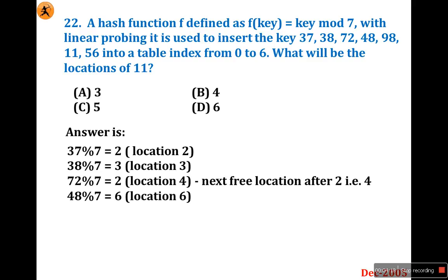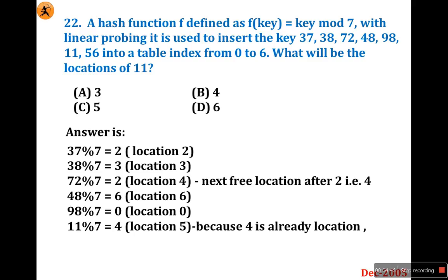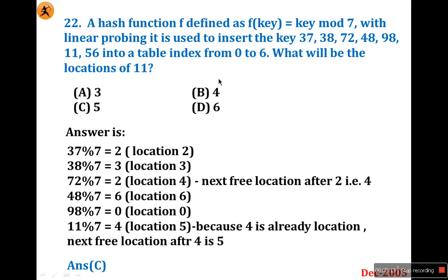Then 48 mod 7 = 6, so 48 is allocated to location 6. And 98 mod 7 = 0, so 98 is allocated to location 0. Locations 0, 2, 3, 4, and 6 are now allocated. Now 11 mod 7 = 4, but location 4 is already allocated, so 11 is placed at the next free location, which is 5. The answer is C.